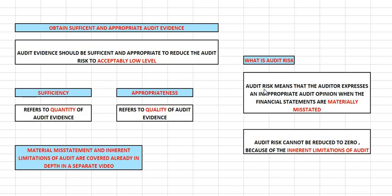Here I'm going to give you a gist about audit risk. Basically, you're the auditor — a CA — going to a limited company to do the audit. The company gives you financial statements that are materially misstated. 'Materiality' means the misstatement may affect the economic decisions of the users of the financial statements. What happens next is that you, the auditor, by mistake express an inappropriate audit opinion, which impacts the economic decisions of the user. He thinks the company is doing well, buys the shares, but eventually the shares fall and he loses his money.